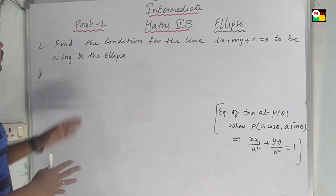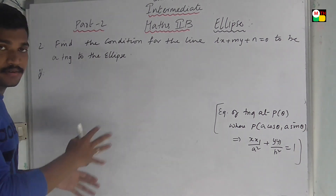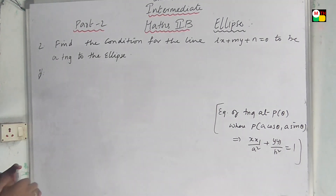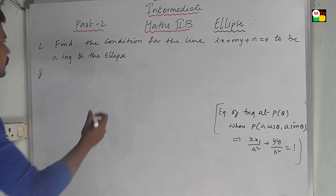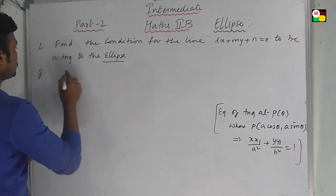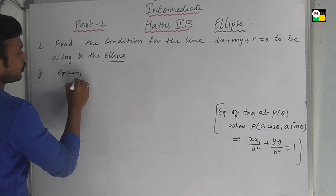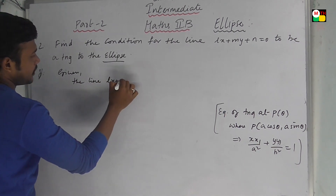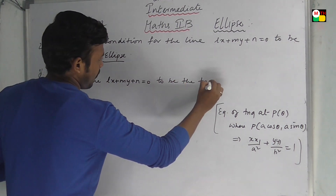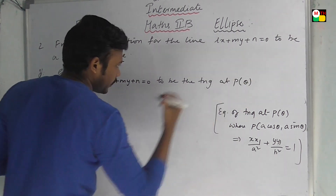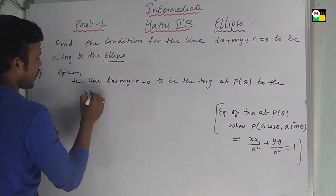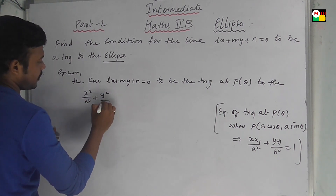Next question — this is also a very important sum. Find the condition for the line lx plus my plus n equal to 0 to be a tangent to the ellipse x square by a square plus y square by b square equal to 1 at point P of theta.